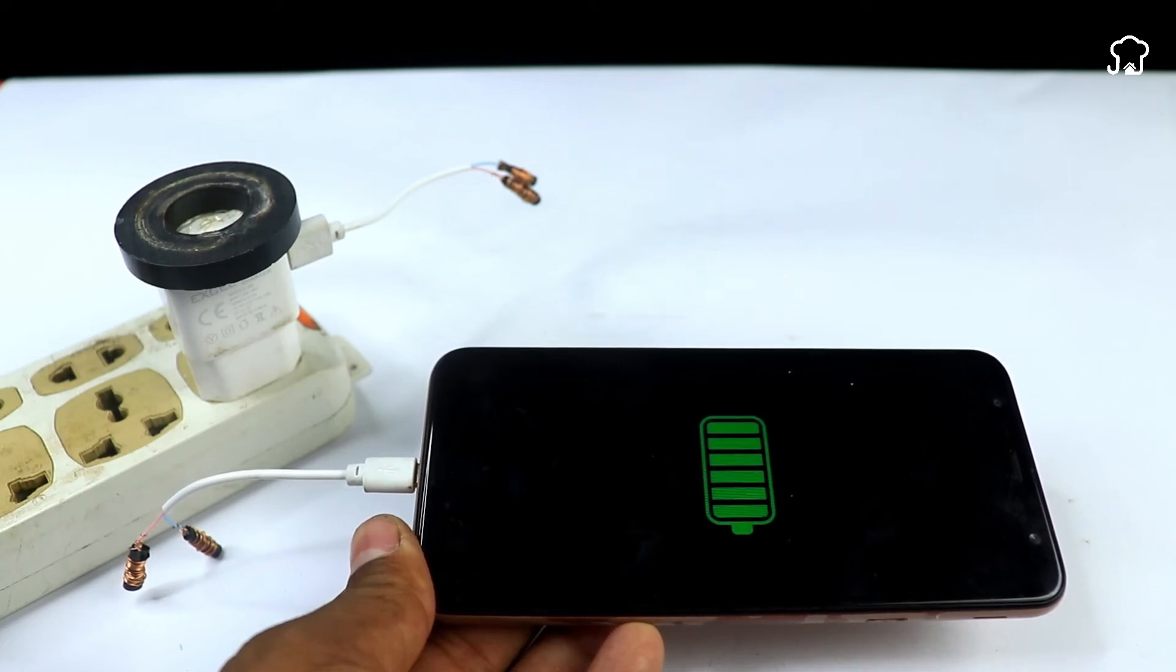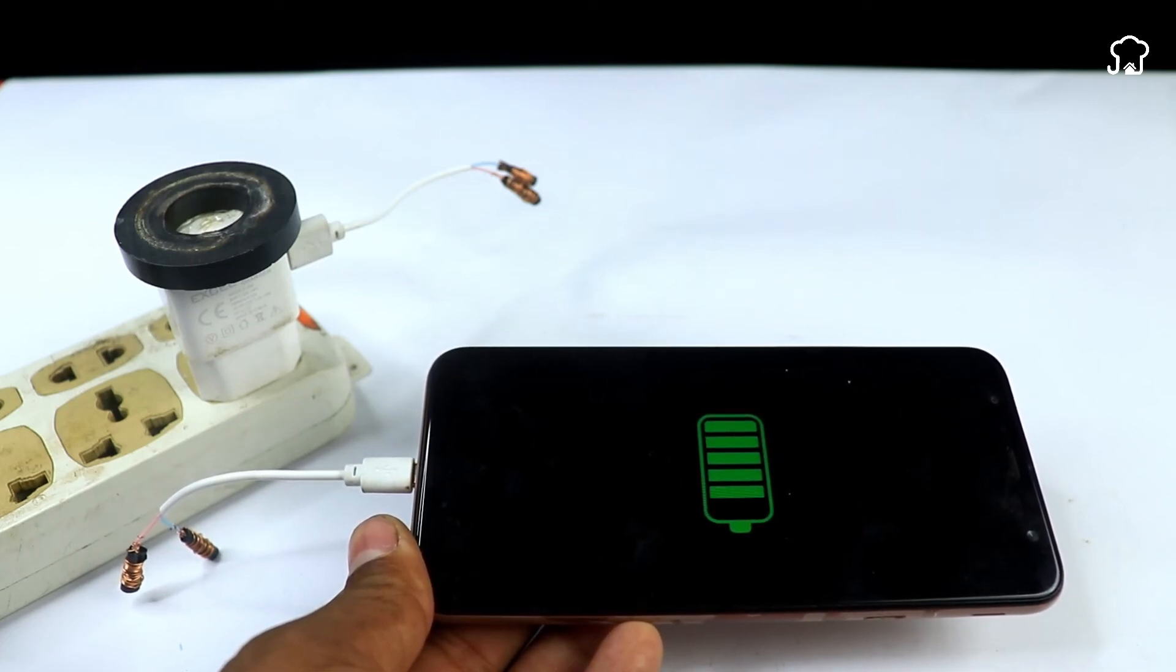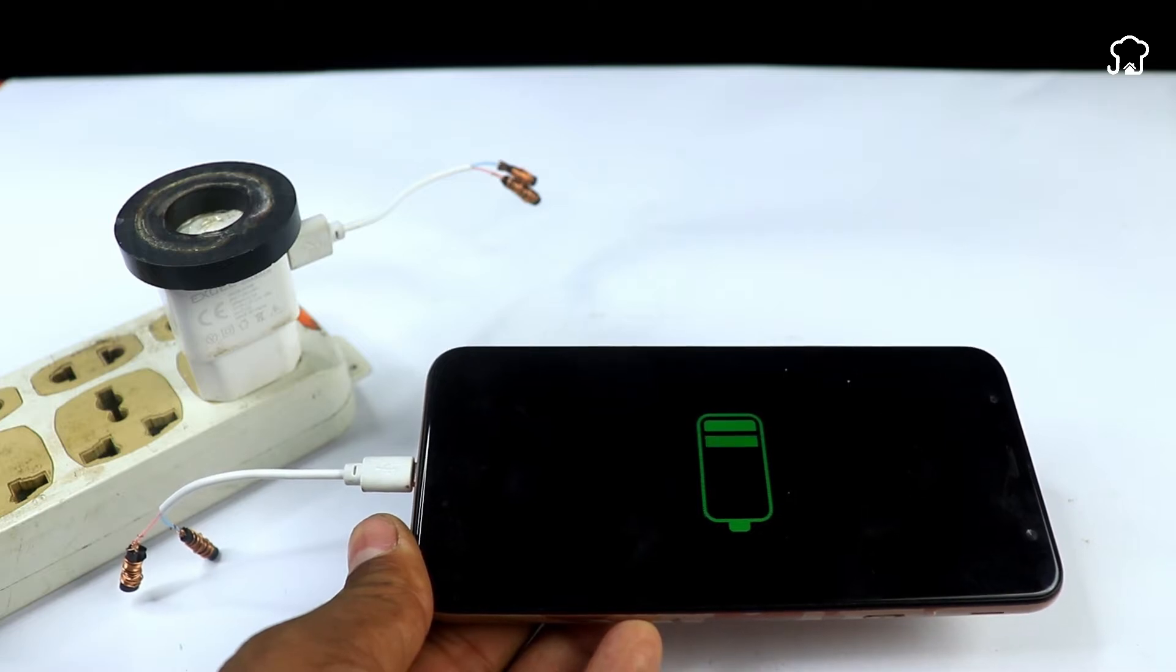To charge your cell phone without being connected to an electric connector, you can follow this homemade method that uses simple materials and basic processes.